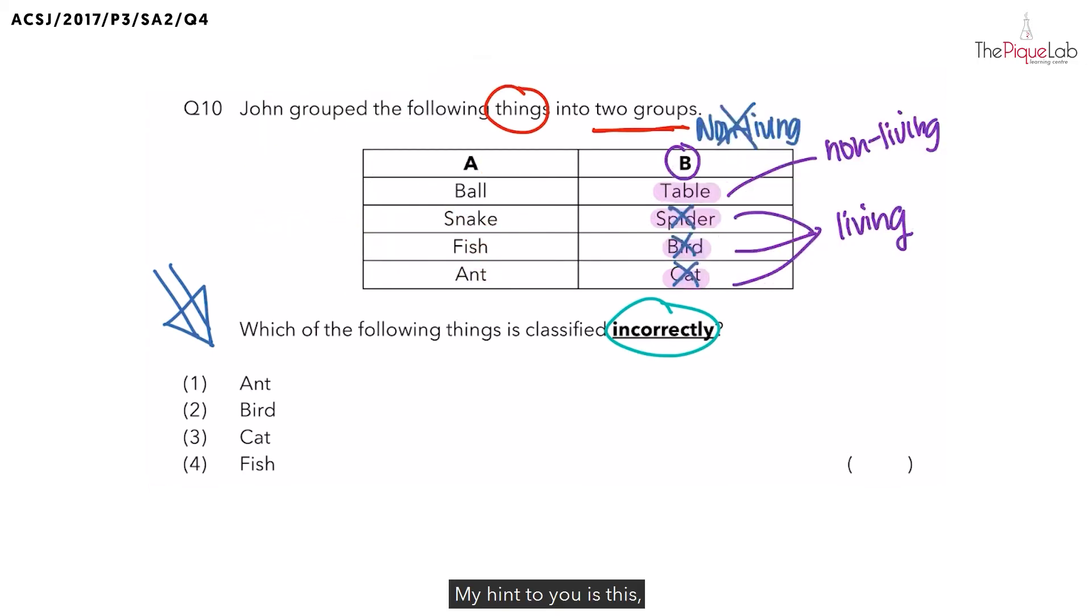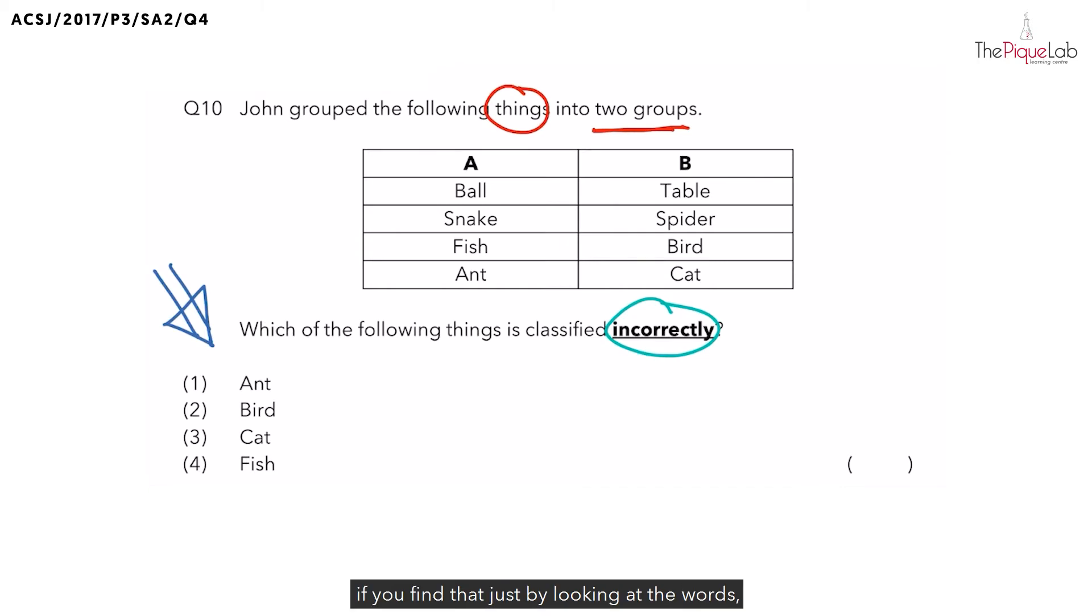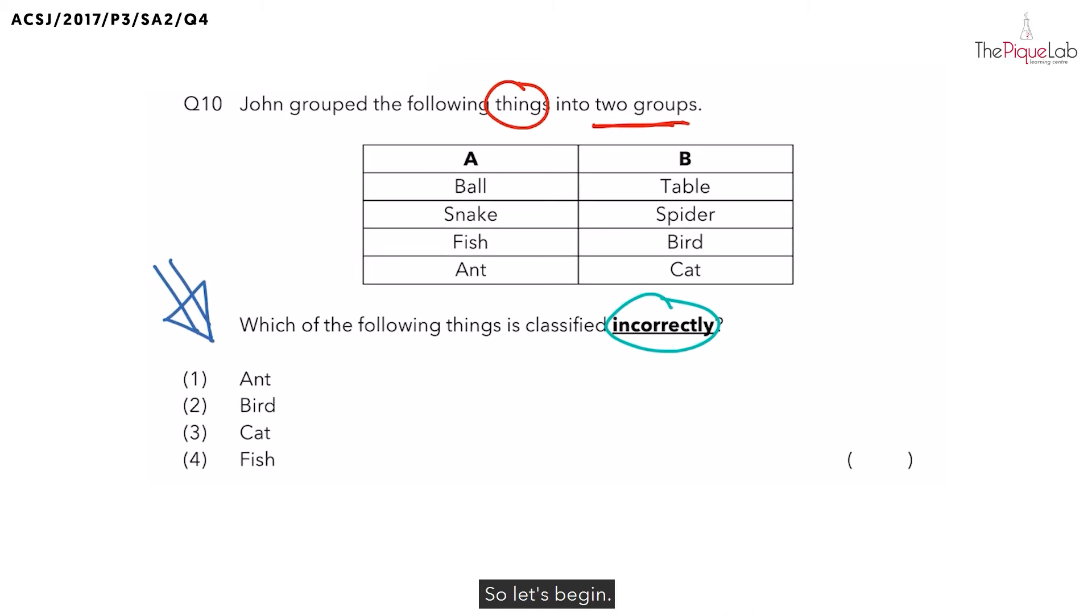My hint to you is this. If you find that just by looking at the words, it is very difficult to visualize how these things are grouped, what you can do is to draw out a simple diagram of these things and see what are the similarities and differences between the things. So let's begin.